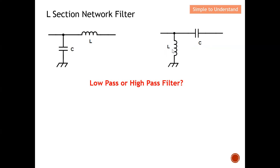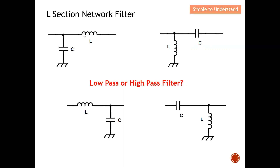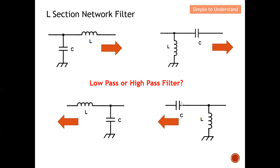There are actually two different types of each filter configuration. For the low pass filter, one version has the LC network pointing to the right and another has it pointing to the left. Similarly for the high pass filter, one points to the right and one points to the left. I'm also going to explain whether your LC network should point to the right or to the left under different scenarios.